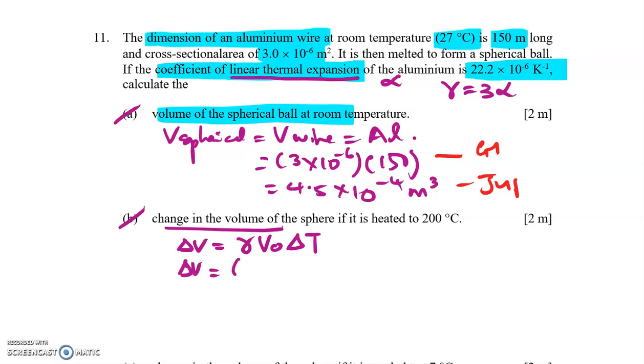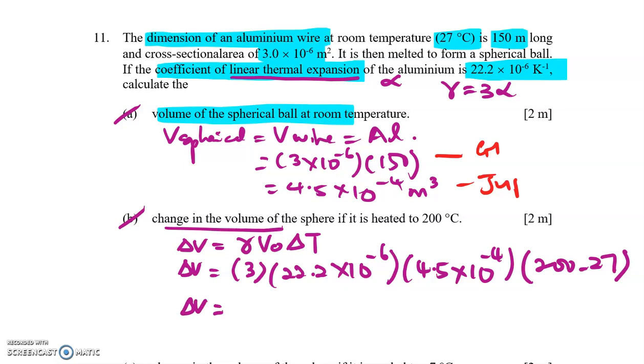So delta V is 3 times 22.2×10^-6, times 4.5×10^-4, and delta T is 200 minus 27. So you have delta V which is 5.18×10^-4 meter cube. So here you also get 2 marks for substitution and for answer with unit.